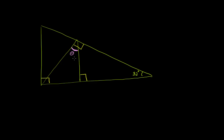They tell us a few other things. This symbol means these are right angles — they have a measure of 90 degrees. So that's a 90 degree angle, that is a 90 degree angle, and that is a 90 degree angle over there. They also tell us that this angle over here is 32 degrees.